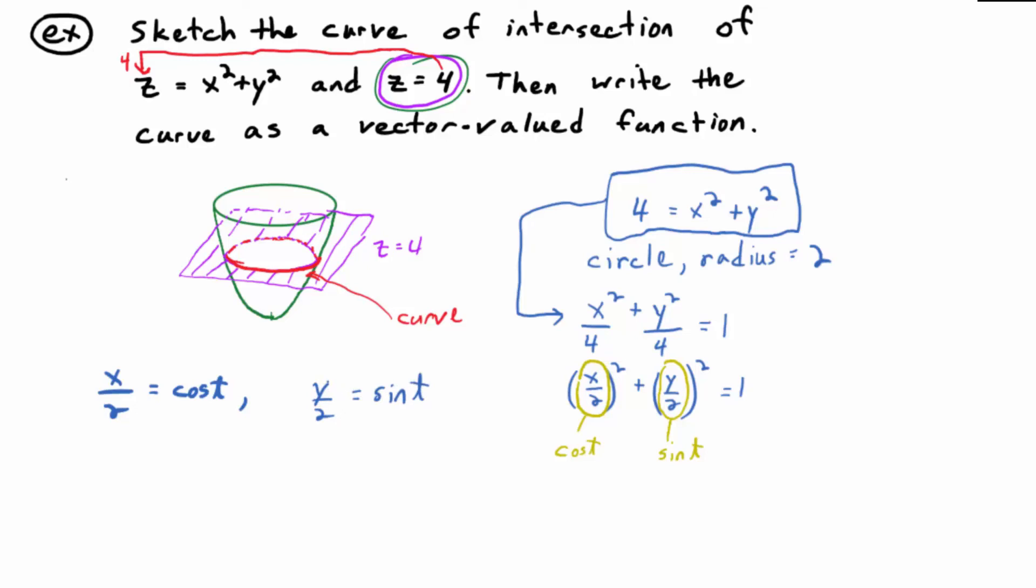And then this is how you get your parametric equations for x and y. Just multiply both sides by two. You get x equals two cosine t, and y equals two sine of t. This will generate the circle.